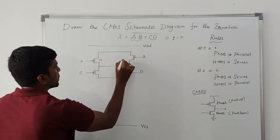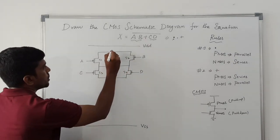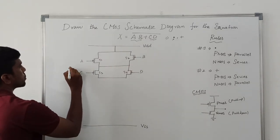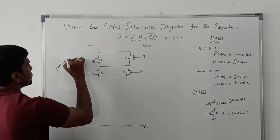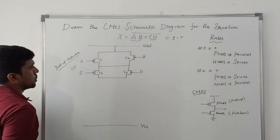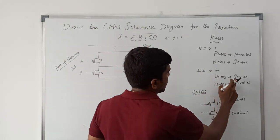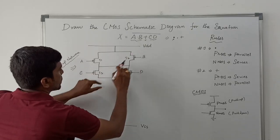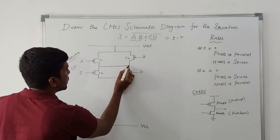So transistors T1, T2, T3, and T4 form the pull-up network, which is connected to VDD at the top. This whole portion is called the pull-up network. The plus operation means the two parallel PMOS networks are connected in series. This line represents that these two networks are connecting in series.